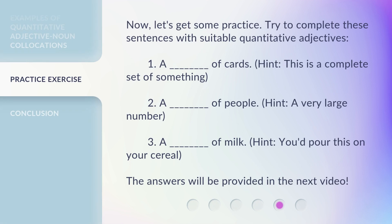Now let's get some practice. Try to complete these sentences with suitable quantitative adjectives. One: this is a complete set of something. Two: a blank of people — hint, a very large number. Three: a blank of milk — hint, you'd pour this on your cereal. The answers will be provided in the next video.